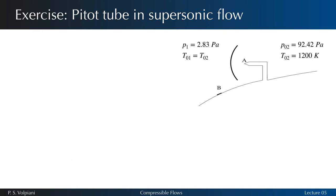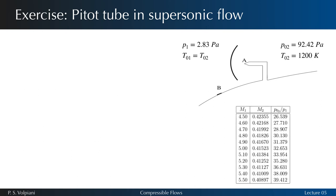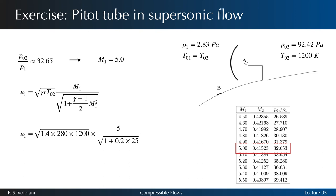Fortunately, we have tabulated values for this relationship, making it possible to determine M1 given the pressure ratio. You can find a table of normal shock relations on my website. We have P02 over P1 approximately 32.65 and we find after reading the table M1 equals 5. Then we can calculate the speed of the shuttle and U1 equals 5000 kilometers per hour.